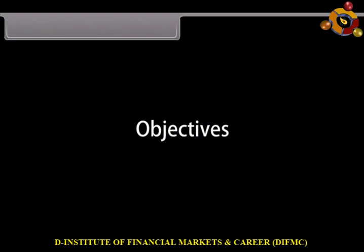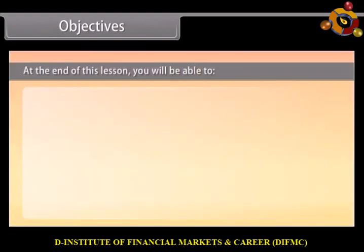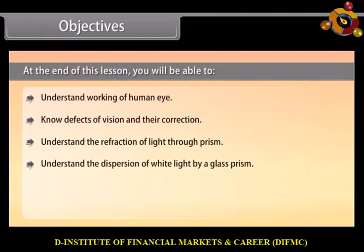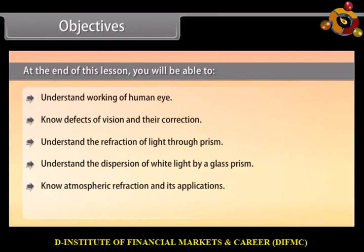Objectives. At the end of this lesson, you will be able to: understand the working of the human eye; know defects of vision and their correction; understand the refraction of light through a prism; understand the dispersion of white light by a glass prism; know atmospheric refraction and its applications; and know scattering and its applications.